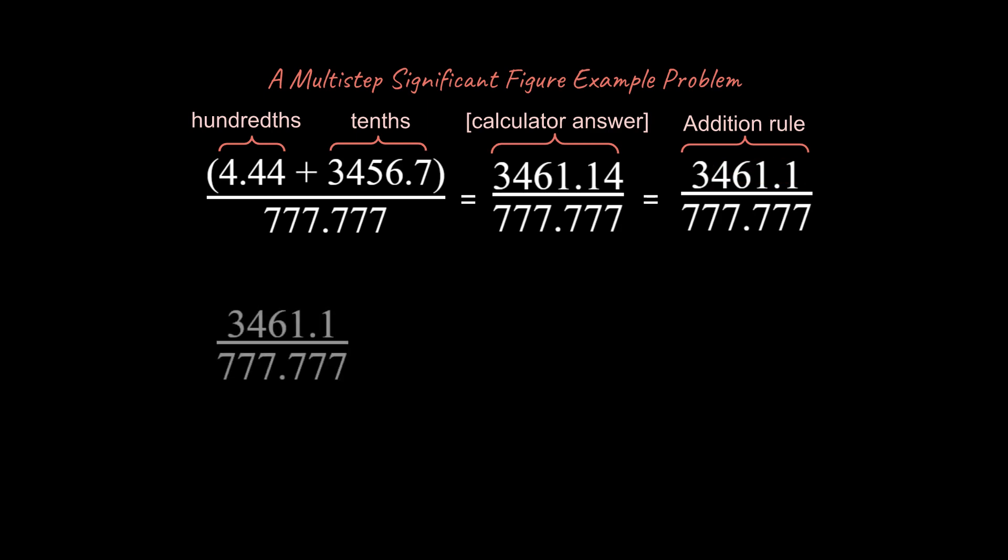The next part of the problem is a division problem. So I want you to think about what the rule is and how this is going to be applied. So in this case remember we don't need to worry about how many places we have to the right of the decimal place. Like it's not tenths and thousandths over here that we're comparing. We're just simply comparing the number of sig figs in total that are up top in the numerator and down below in the denominator. And in this case we've got five sig figs up top, six sig figs down below. And so our answer should have how many sig figs?